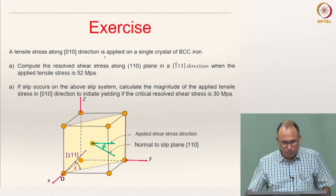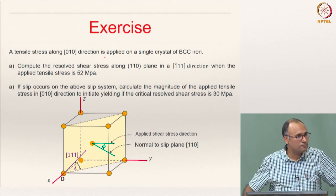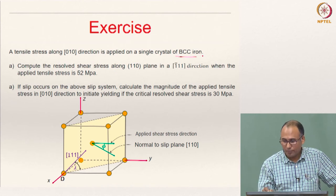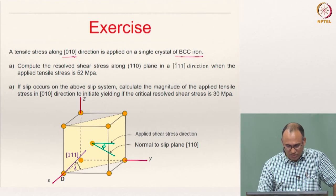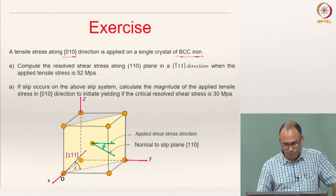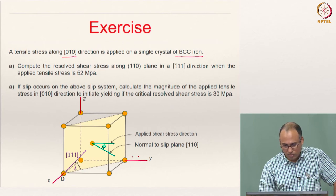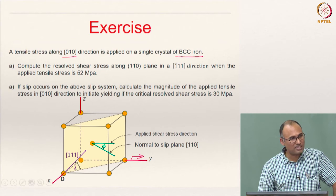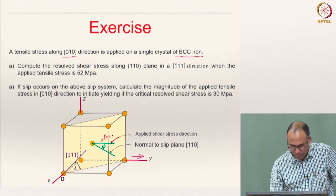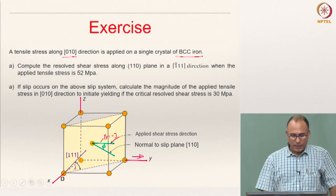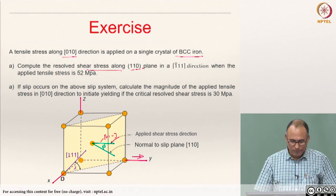Now let us solve a problem. You have a single crystal of BCC iron, and you are applying a tensile stress along the [010] direction. You need to compute the resolved shear stress along the (110) slip plane in the [1̄11] slip direction when the applied stress is 52 MPa. First, identify the directions: [010] is the loading axis, (110) is the slip plane.